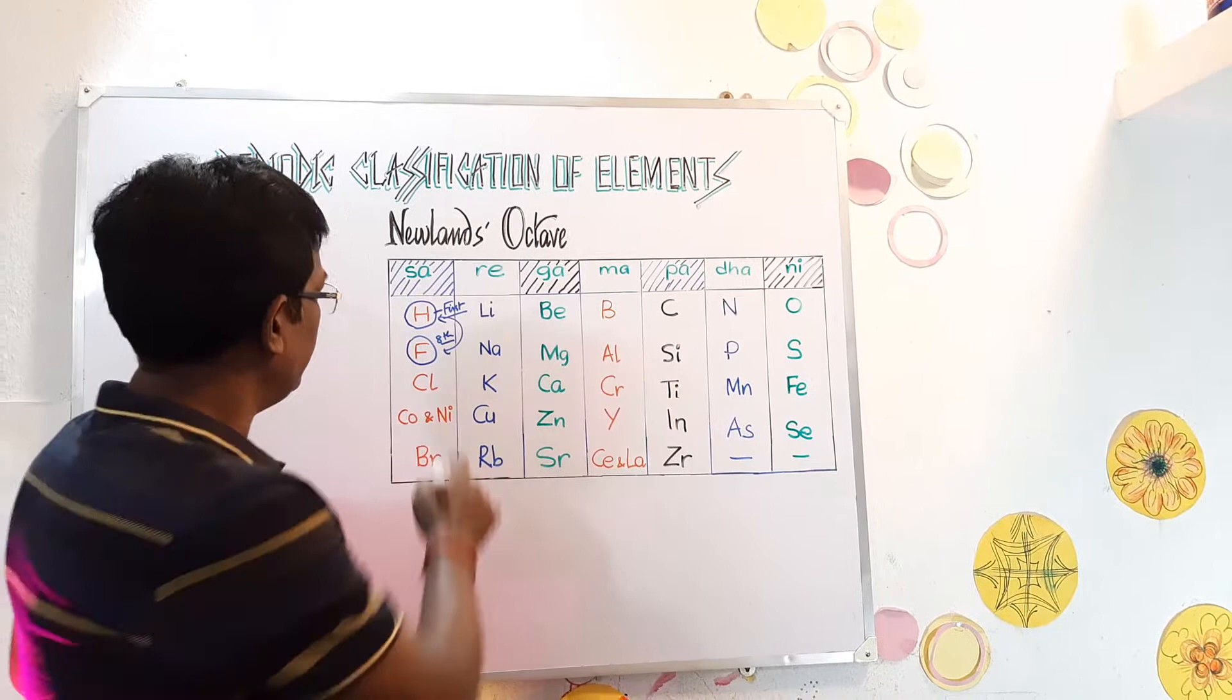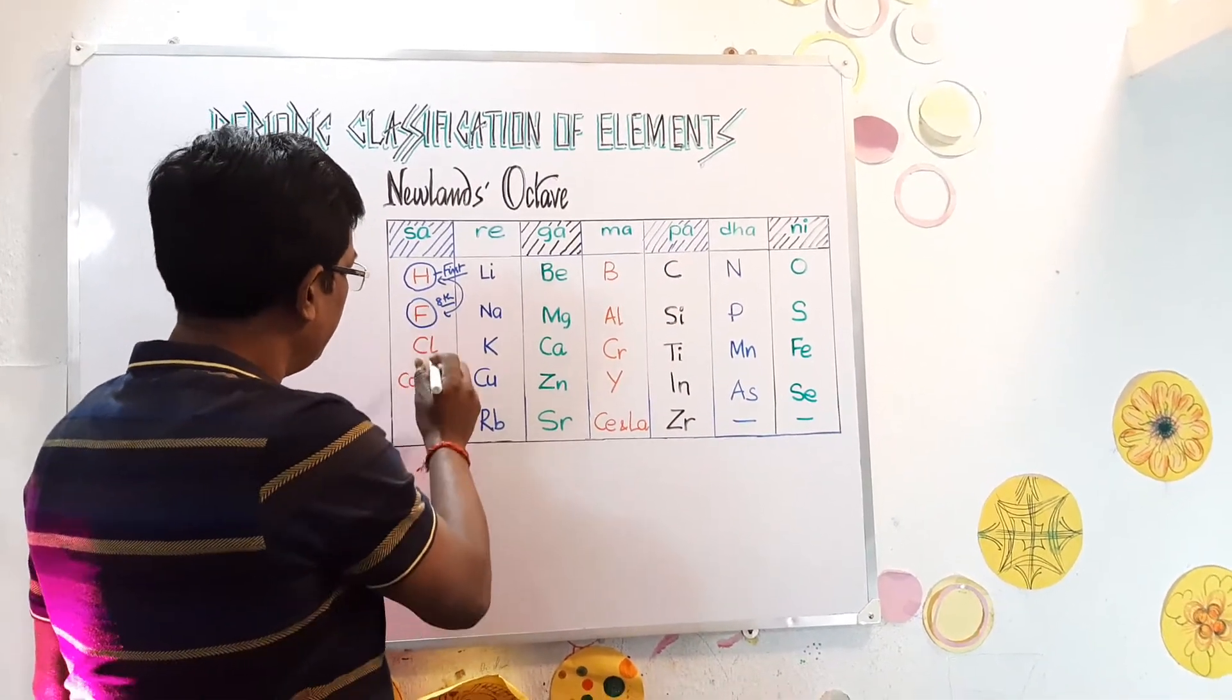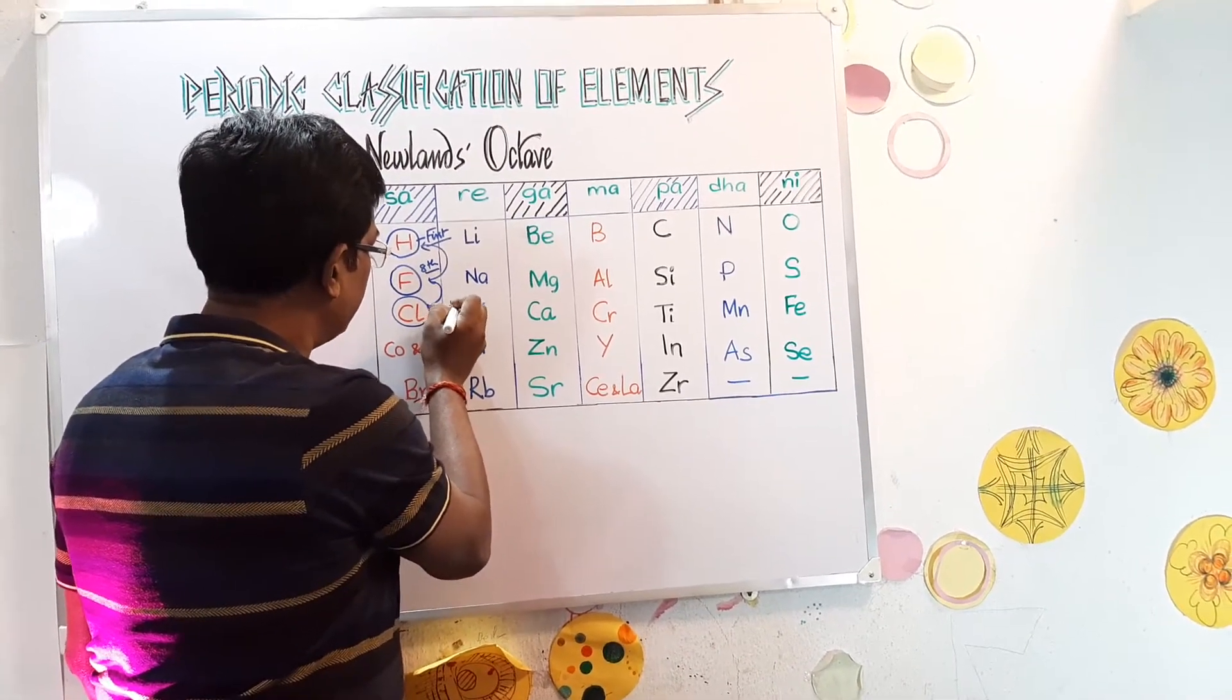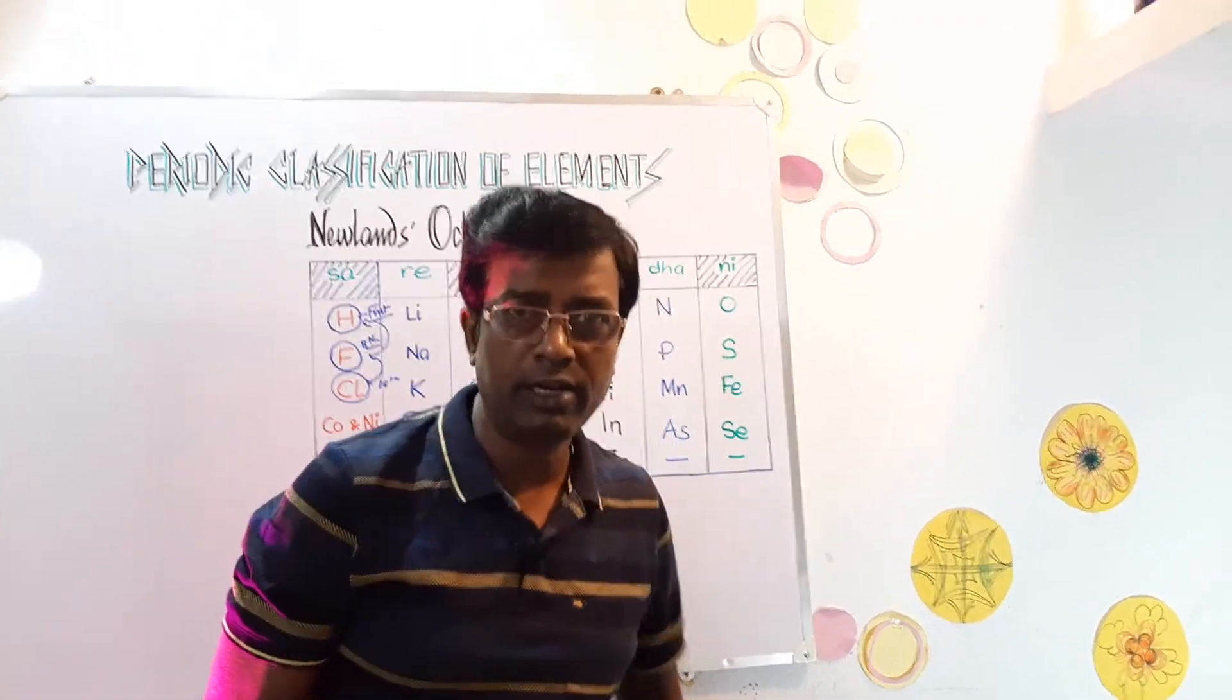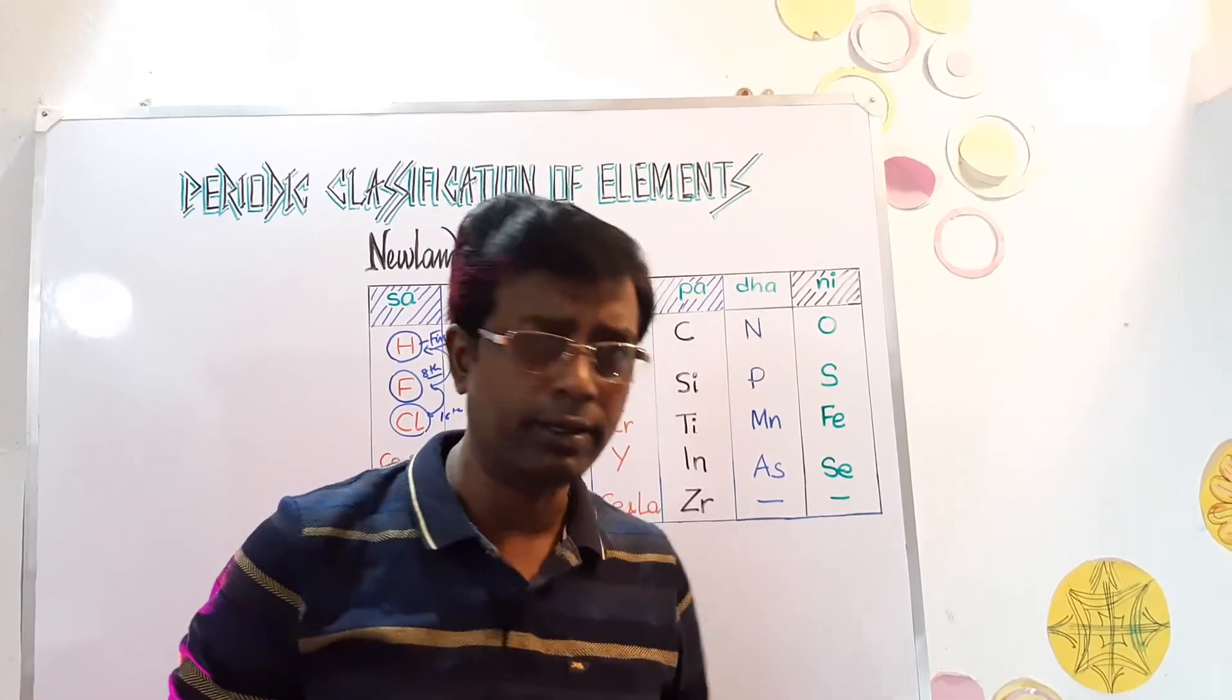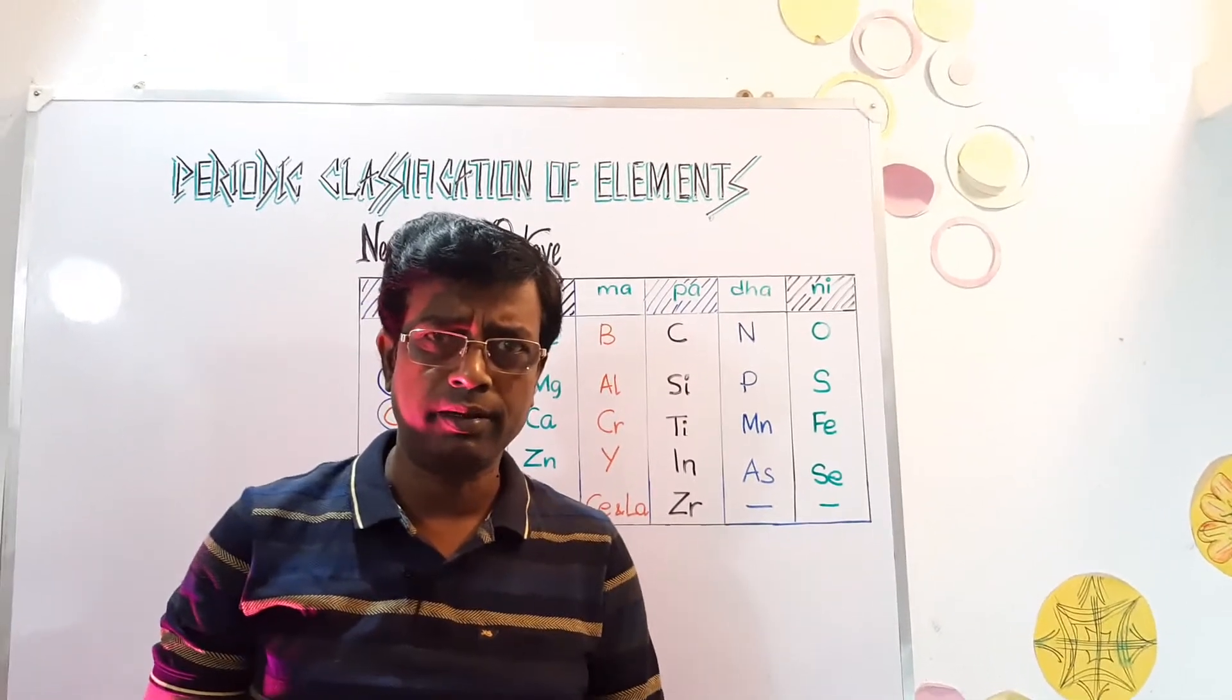Similarly Chlorine, after Fluorine, again after gap, 8th element after Fluorine is Chlorine here. So they fall in the same group, this is the 16th element. So it was a marvelous attempt by Newlands how elements should be organized in increasing order of atomic number. Now but few drawbacks arise.